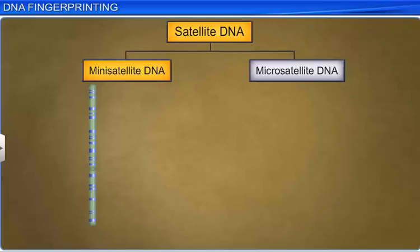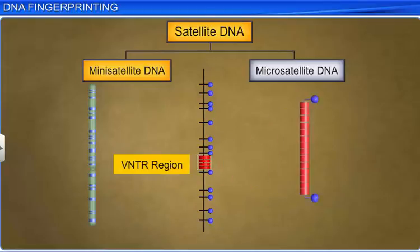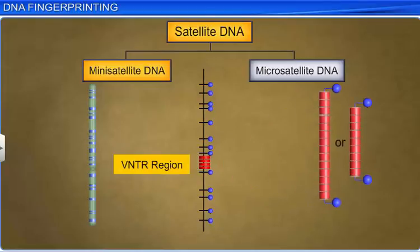Mini-satellite is a section of DNA which has a variable number of tandem repeats, or VNTR. It has sequences of 15 to 100 base pairs, repeated hundreds or thousands of times.